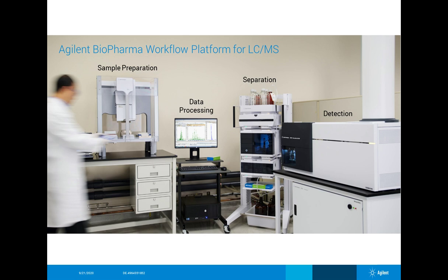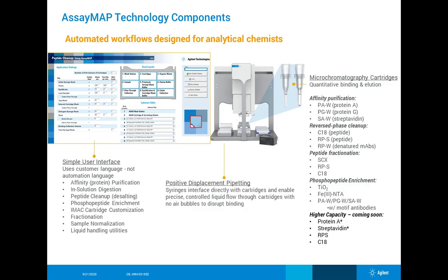What is the workflow we're discussing here? We have sample prep up front — that's the AssayMap Bravo, which you can see in the picture on the far left-hand side. Agilent has the full continuum, so you can do your sample prep with the AssayMap Bravo, then your separation and detection with our LC-MS products, as well as data processing with all of our different software packages that are available.